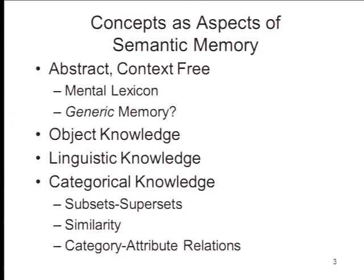We also have linguistic knowledge, knowledge about the meanings of words. And then categorical knowledge that underlies our ability to assign objects to subsets and supersets, to make judgments of similarity, and to infer from knowledge of categorization what attributes an object may have. So if I say I'm going to show you my car, you know you're going to look at something that's more or less metal, has four wheels and a driver's compartment. You can infer what attributes an object has just by knowing what category it belongs to.